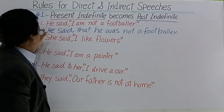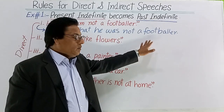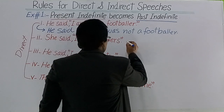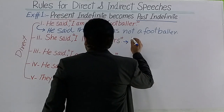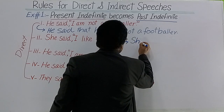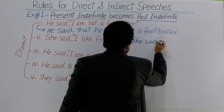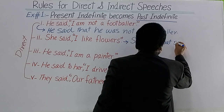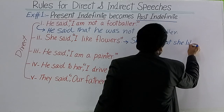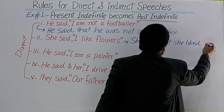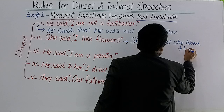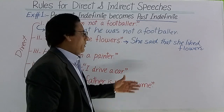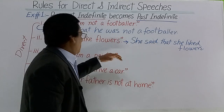تو یہ direct speech تھی جو ہم نے indirect speech میں convert کر دی۔ اس کے بعد number two: She said, 'I like flowers.' انڈائریکٹ میں کہیں گے: She said that she liked flowers. یا flowers کے بعد کچھ اور بھی بول سکتے ہیں — دونوں طرح سے ٹھیک ہے۔ تو یہ indirect ہو گیا۔